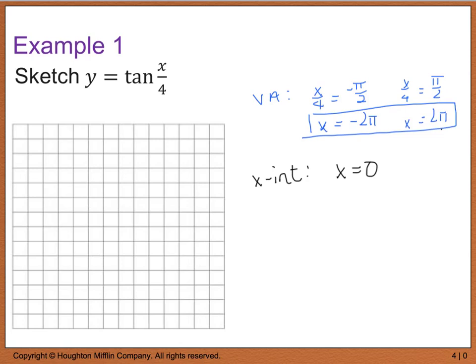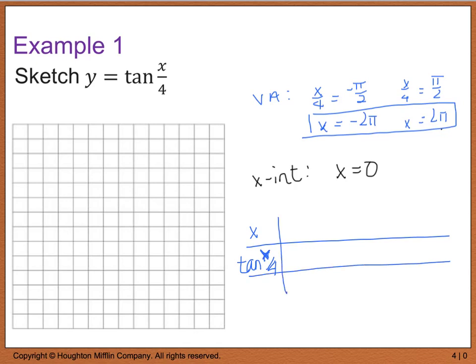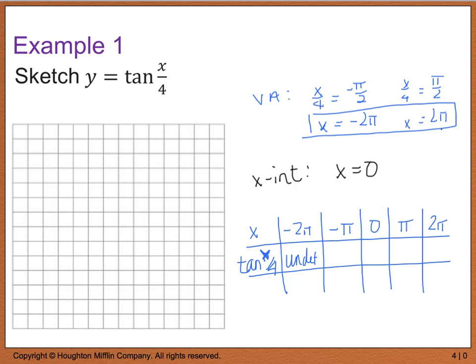Setting up a table with x values and tan(x/4): at x = -2pi, the function is undefined (vertical asymptote). At x = -pi, tangent of -pi/4 is -1. At x = 0, tangent of 0 is 0. At x = pi, tangent of pi/4 is positive 1. At x = 2pi, the function is undefined again.